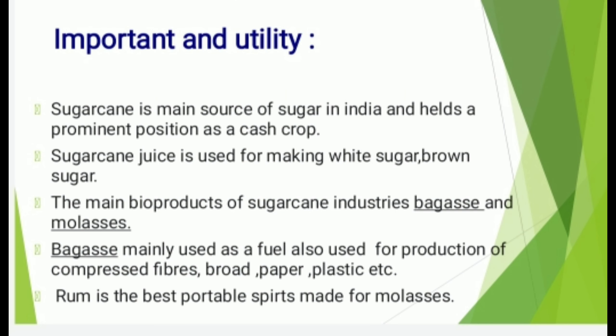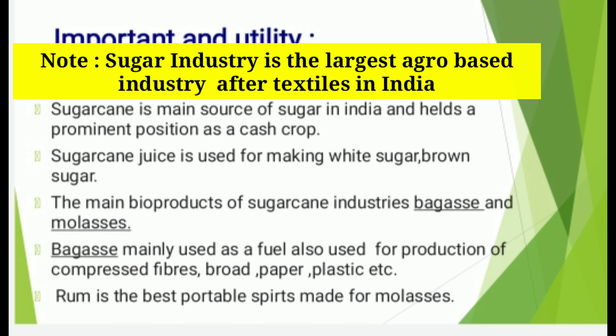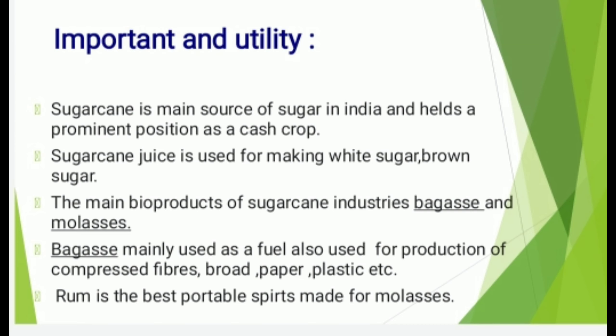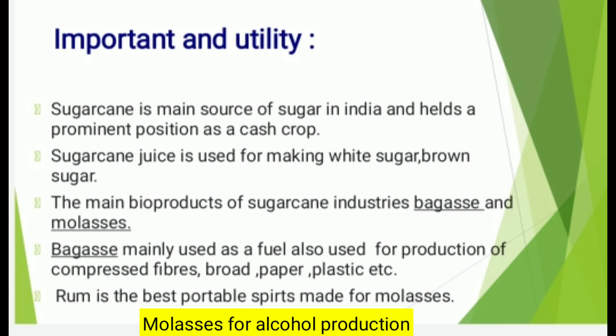Important Utility of Sugarcane: Sugarcane is a main source of sugar in India and holds a prominent position as a cash crop. Sugarcane juice is used for making white sugar and brown sugar. The main by-products of the sugarcane industry are bagasse and molasses. Bagasse is mainly used as a fuel, and also for production of compressed fiber, board paper, plastic, etc. Rum is the best portable spirit made from molasses.